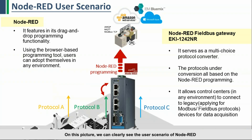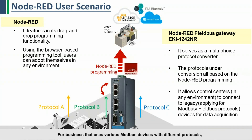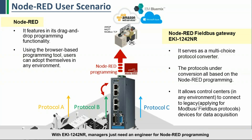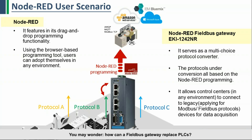On this page, we can clearly see the user scenario of Node-RED. In a traditional plant, there will be sensors and MODBUS devices. A PLC is usually required to process data. For businesses using various MODBUS devices with different protocols, you must have multiple PLCs to meet the multi-protocol environment. With the AK2042 NR, you just need one engineer for Node-RED programming, making the AK2042 NR a multi-protocol conversion gateway that can replace PLCs. You may wonder: how can a fieldbus gateway replace PLCs? Can just a fieldbus gateway achieve predictive maintenance?